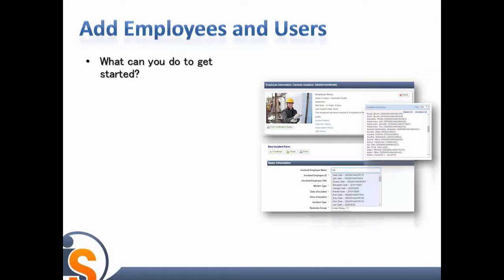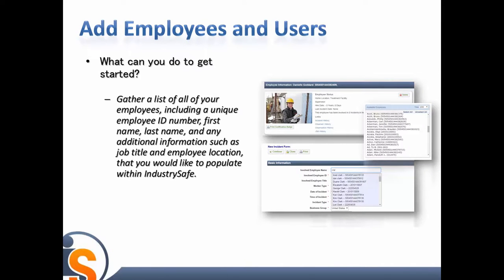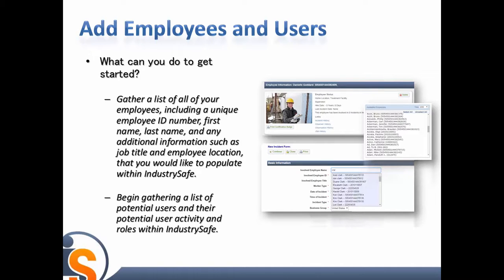What can you do to get started? To get started adding employees, gather a list of all your employees, including the unique employee ID number, first name, last name, and any additional information such as job title and employee location that you would like to pre-populate within IndustrySafe. To get started adding users, begin by gathering a list of potential users and their potential user activity and roles within IndustrySafe.